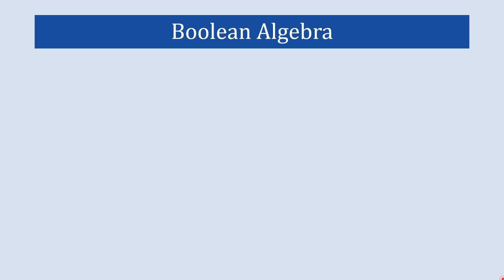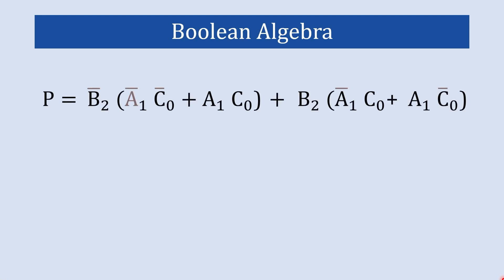In this video we are going to learn about Boolean algebra in digital electronics. Boolean algebra is a mathematical system that deals with binary variables and logic operations. It was a revolutionary idea to represent logical statements and operations using algebraic equations. Those equations involve two values — true and false, or more commonly known in digital electronics as one and zero.